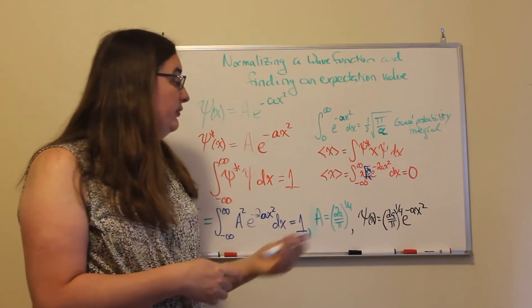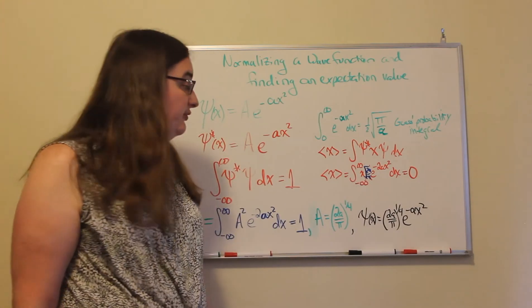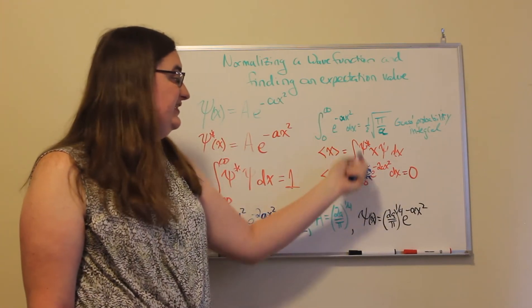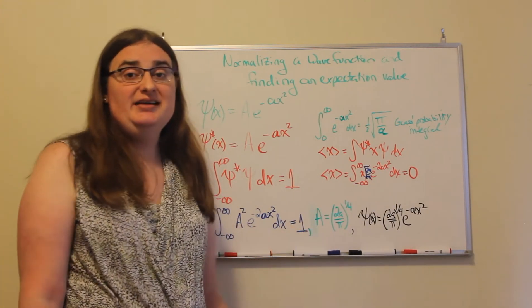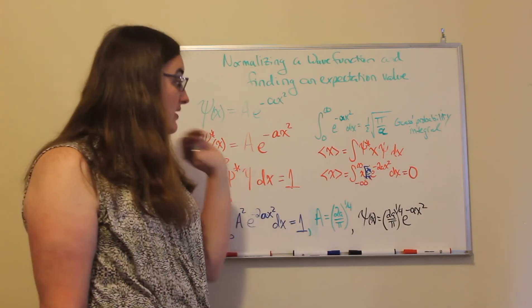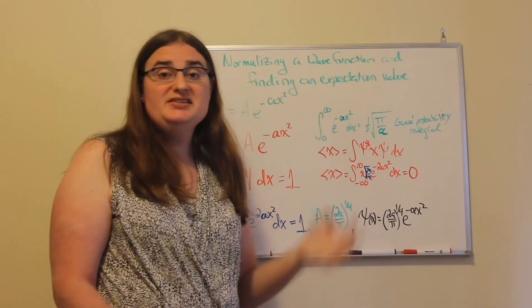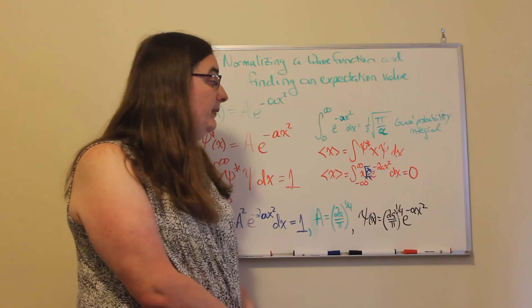And if I were to evaluate this integral, that constant just gets pulled out of the front, and x e to the minus a constant times x squared is something that evaluates to a constant just like the basic Gauss's probability integral.